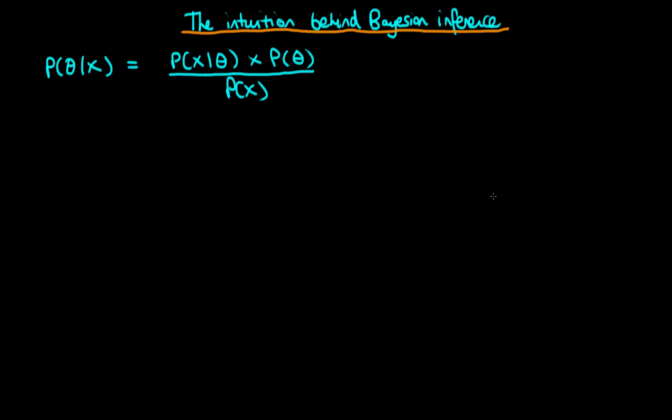In this video I want to talk about the intuition behind Bayesian inference. So on the top left here I've just written out Bayes' rule, and we see that the denominator term here doesn't contain any theta dependence. And because of that, the entirety of the shape of the posterior is determined by the numerator of Bayes' rule.